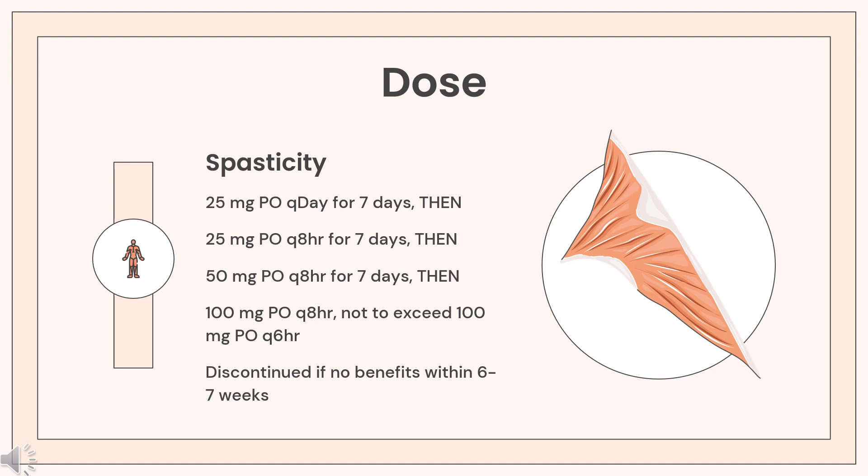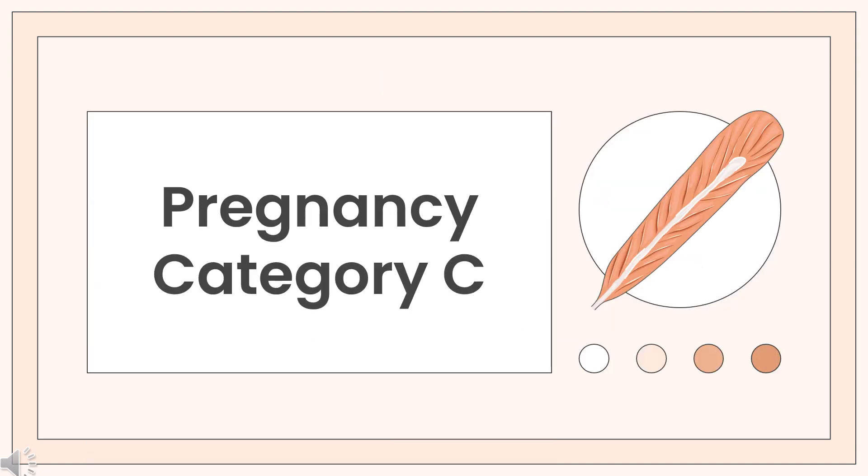Spasticity dosing: 25 mg PO once daily for 7 days, then 25 mg every 8 hours for 7 days, then 50 mg every 8 hours for 7 days, then 100 mg every 8 hours, not to exceed 100 mg every 6 hours. Discontinue if no benefit within 6 to 7 weeks. Neuroleptic malignant syndrome (off-label): 25 mg per day, gradually increase to 150 mg per day.